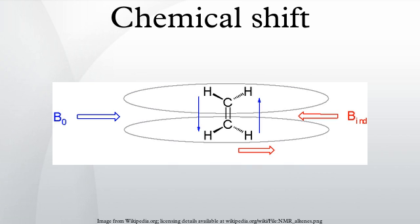Electron withdrawing substituents such as nitro groups lead to deshielding of the nucleus. Not only substituents cause local induced fields. Bonding electrons can also lead to shielding and deshielding effects.